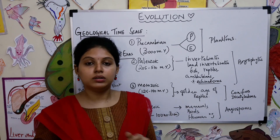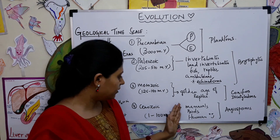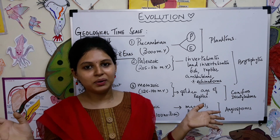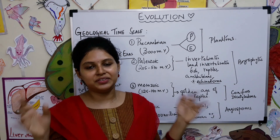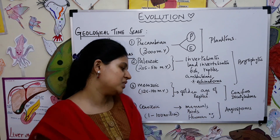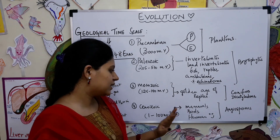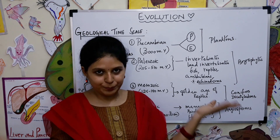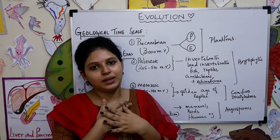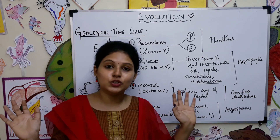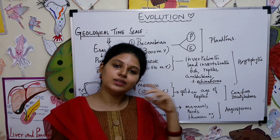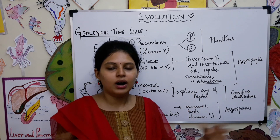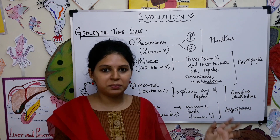The Cenozoic era ranges from about 1 to 100 million years ago. In this era we had mammals, birds, and finally humans with our technical and scientific world. Right after humans evolved, there was a golden period of angiosperms — the flowering plants — and various ornamental plants like rose, jasmine, and sunflower flourished in this era.